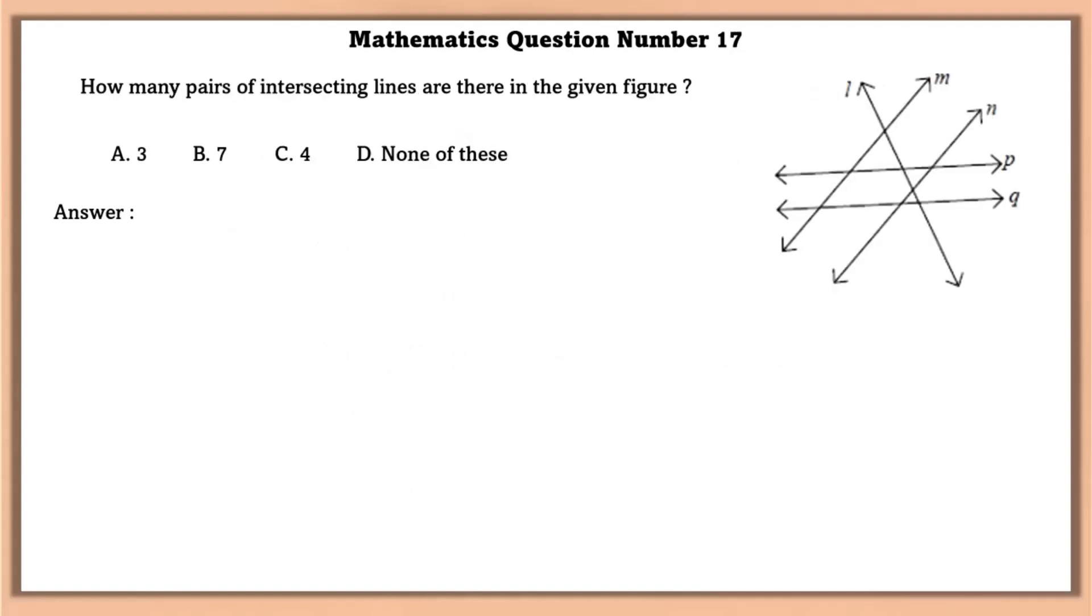Mathematics question number 17. How many pairs of intersecting lines are there in the given figure? Let us count. Now there are more than 7 intersecting lines in the given figure. So the answer is none of these.